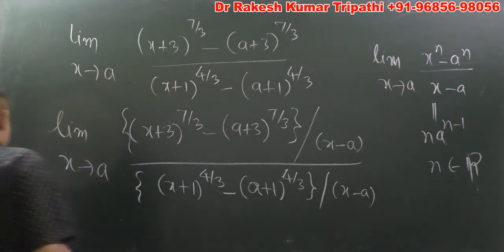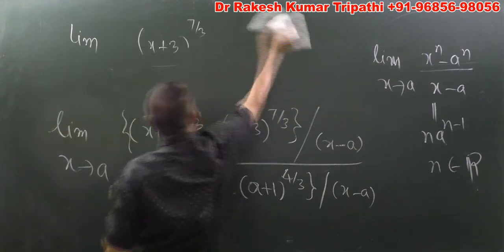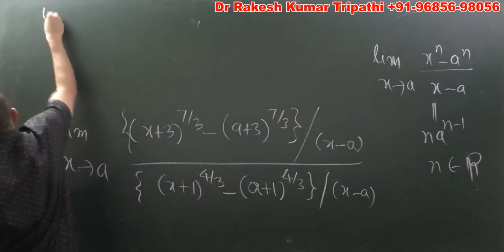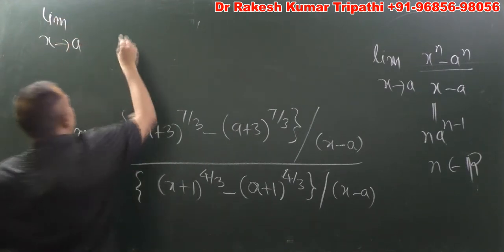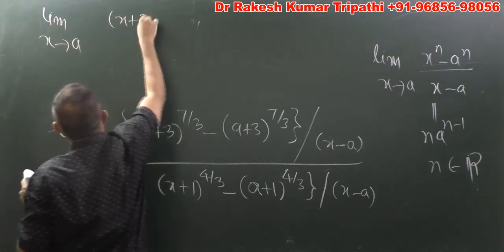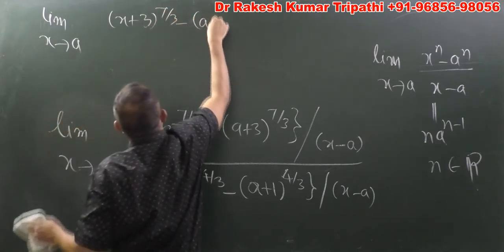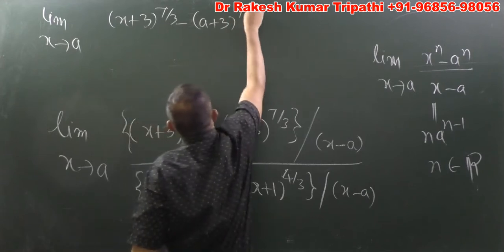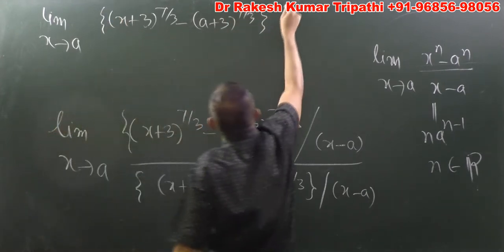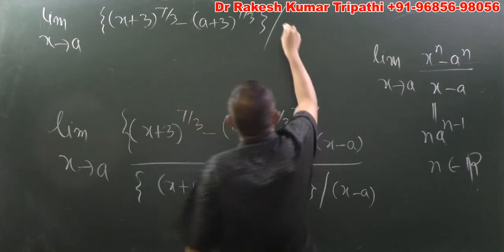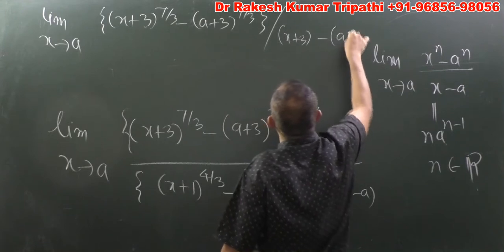Let's move ahead and try to write it in that way. Limit x tends to a of (x+3)^(7/3) minus (a+3)^(7/3), all divided by — in the denominator we can have (x+3) minus (a+3).